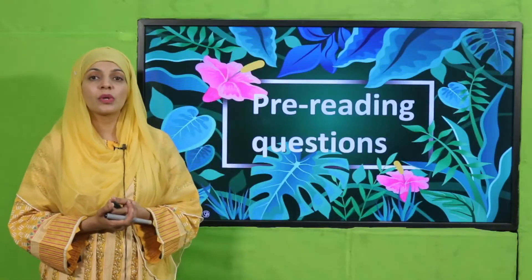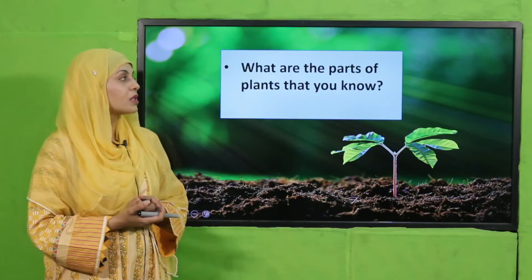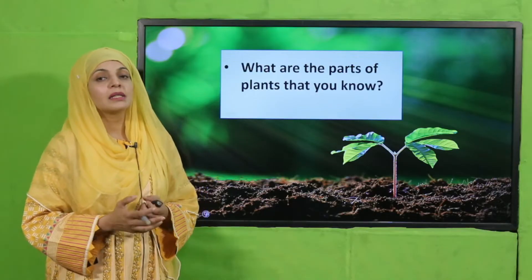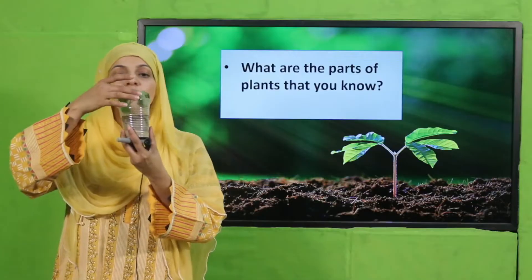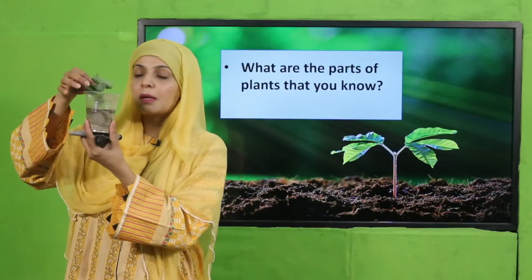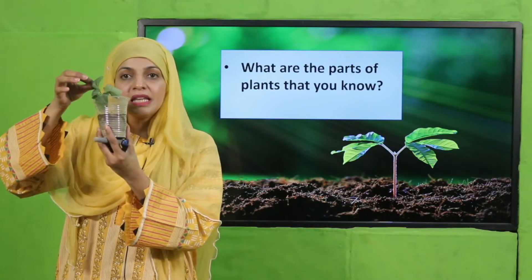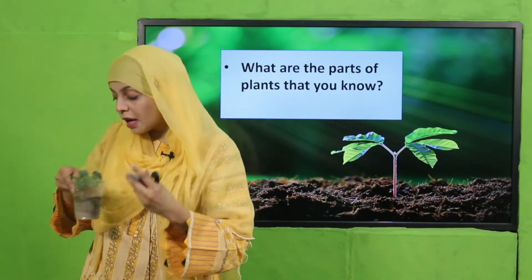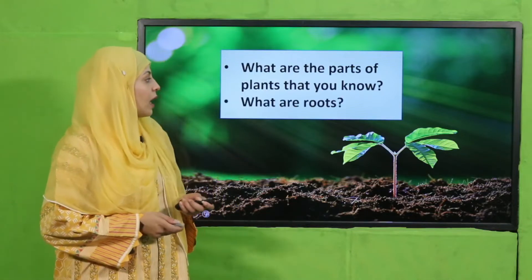Let's move forward towards the pre-reading question. Listen carefully and then answer — quickly tell me, what are the parts of the plant that you know? Plant ke koi parts hain jo aap ko pata ho. Here you can see a plant — its parts are leaf, then stem, and the underground part is root. Very good!